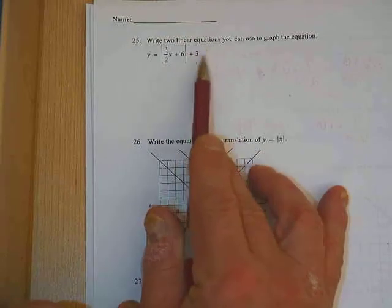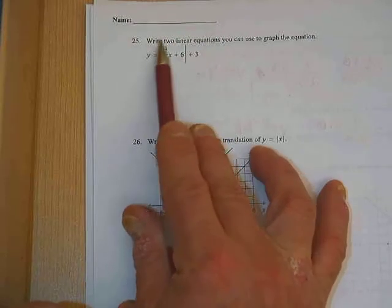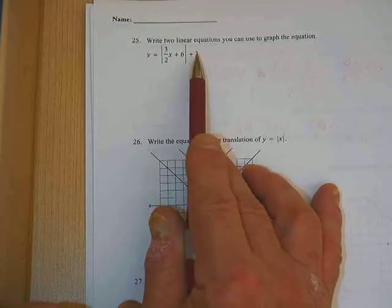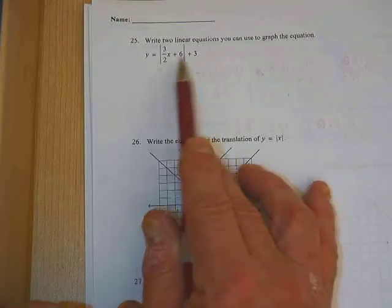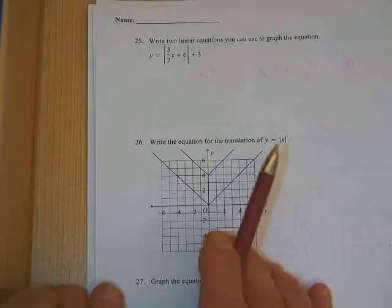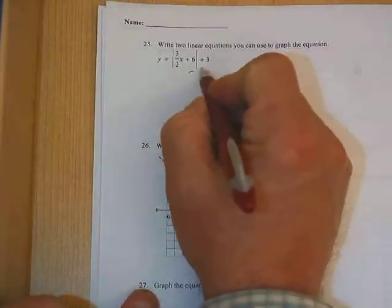The first thing you want to do when trying to write these equations is you have to get everything else that's over here with the absolute value bar stuff on the other side. So how am I going to get this plus 3 away from the absolute value bar stuff? Subtract 3 from both sides.